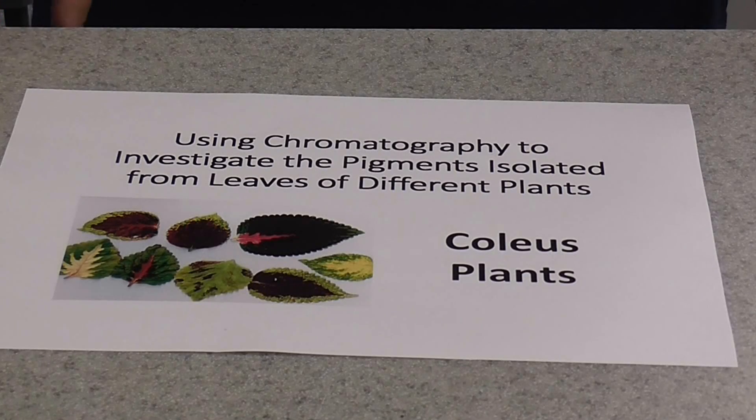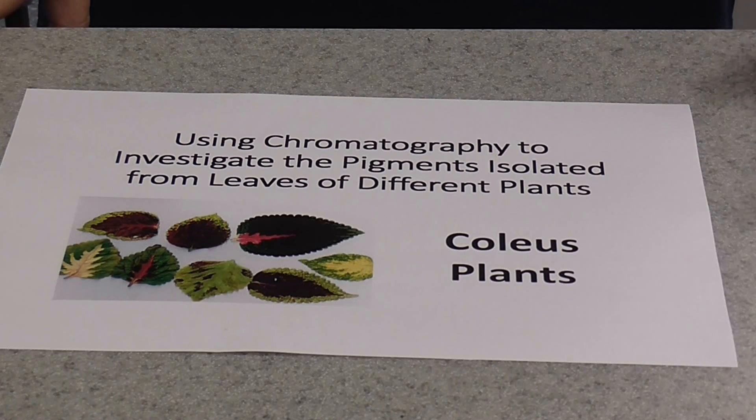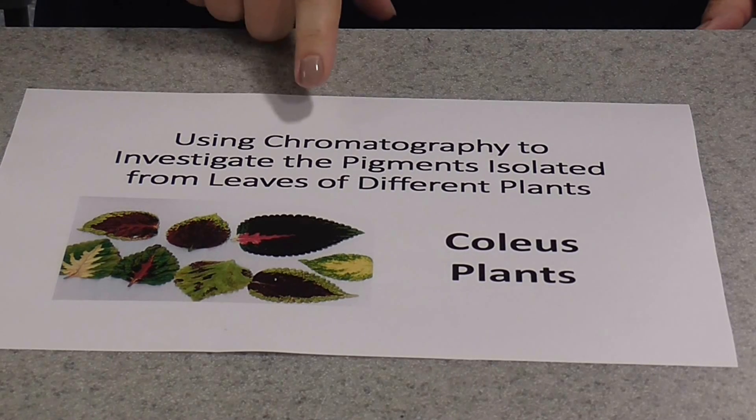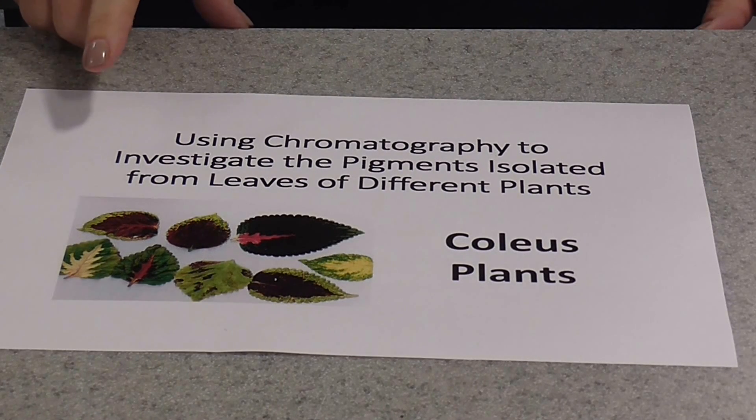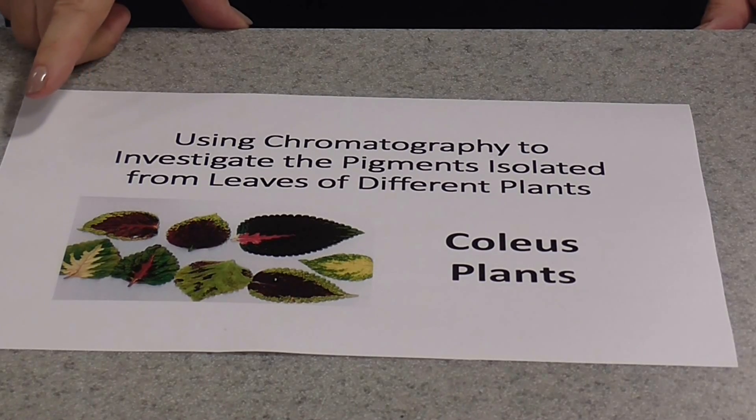I'm going to show you how to do one of the A-level biology practicals. This is required for A-level but not for AS-level. It's using chromatography to investigate the pigments isolated from leaves of different plants.